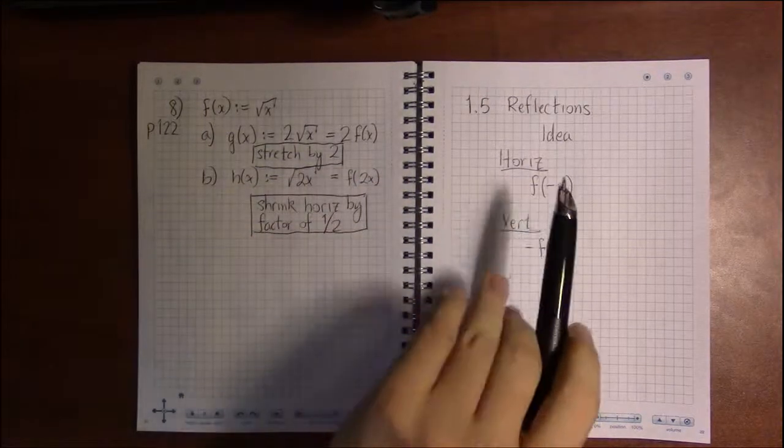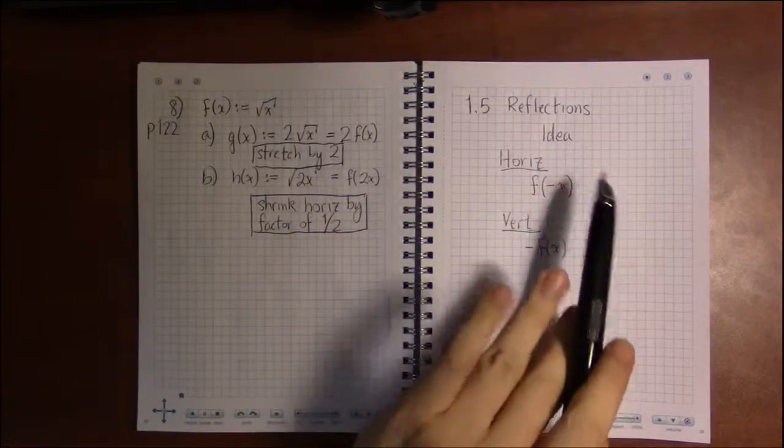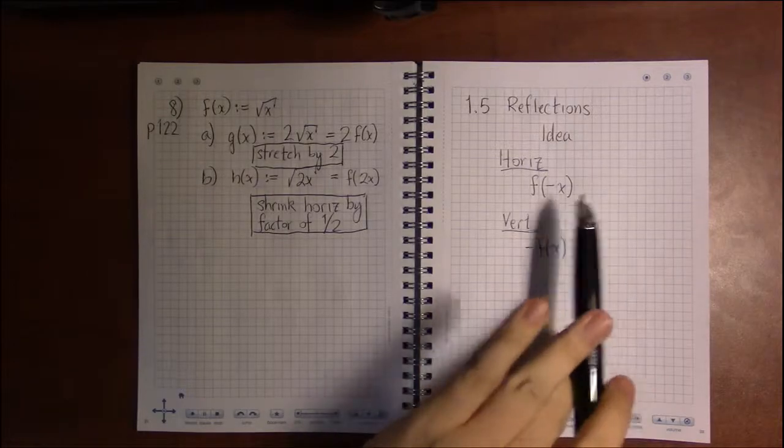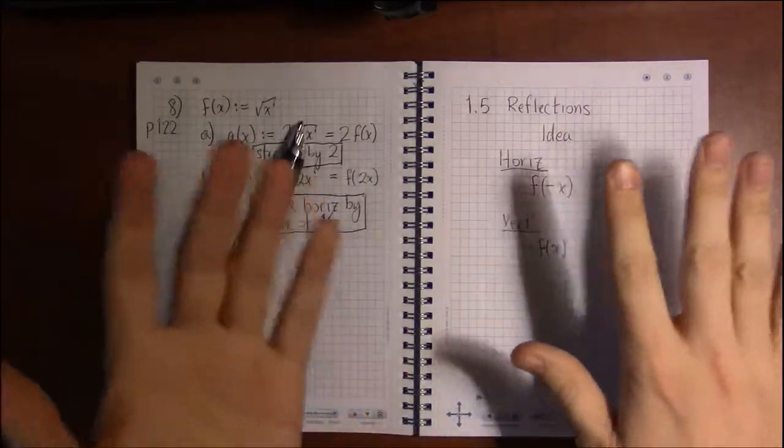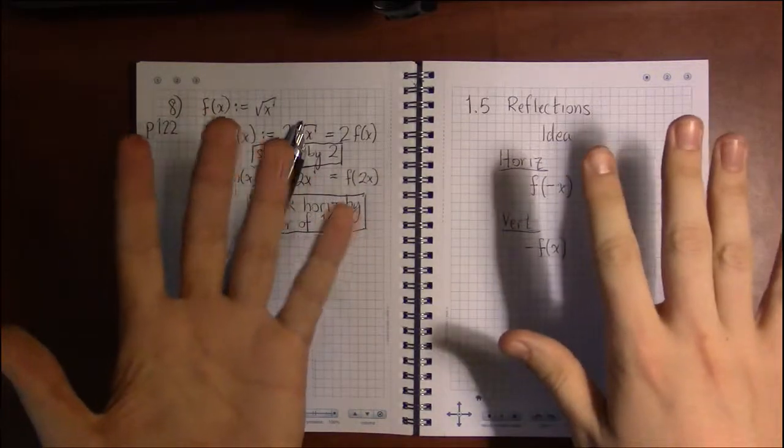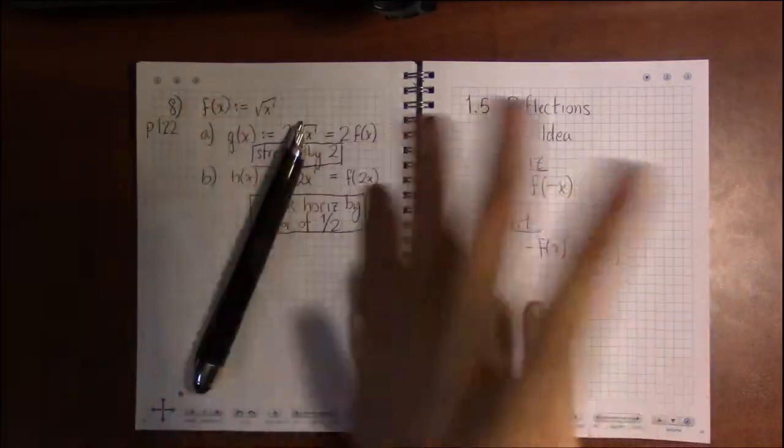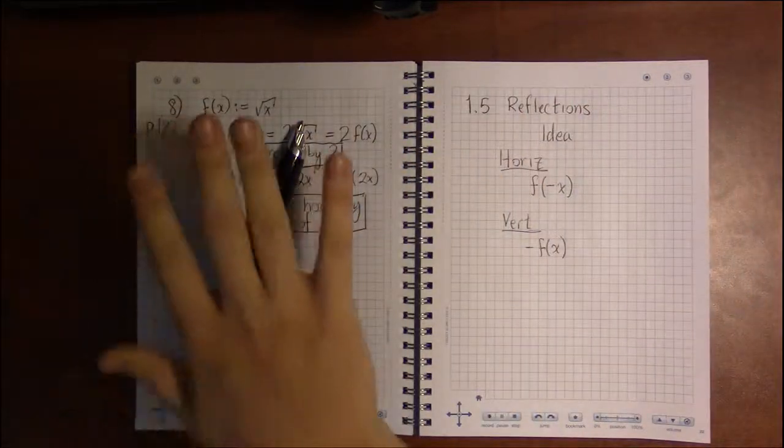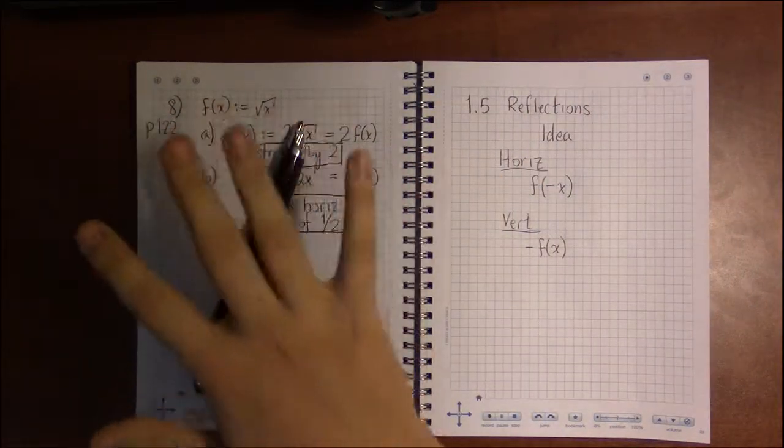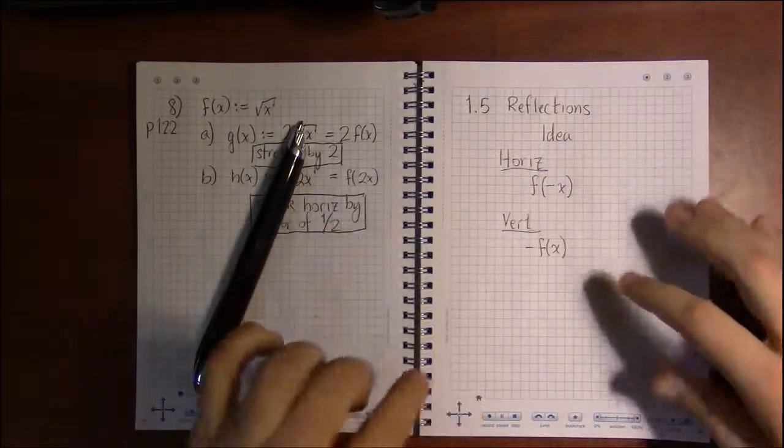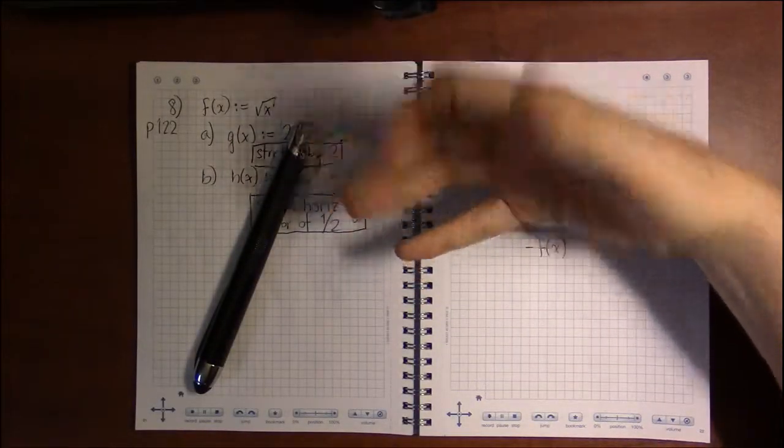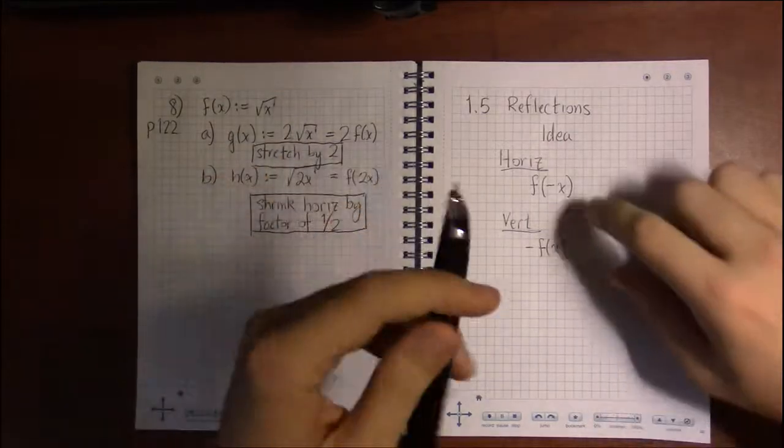All right, there's one more basic transformation to go over, and that's the idea of doing a reflection. Horizontal reflection just flips—what was on the left is now its mirror image on the right, and what was on the right now appears on the left but mirrored. Vertical reflections will flip top and bottom.